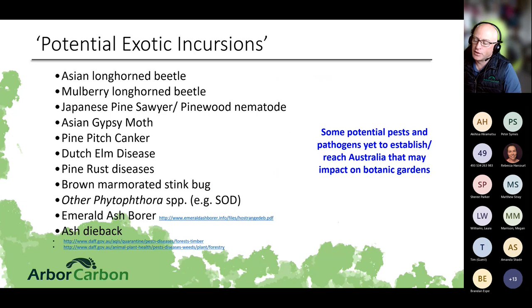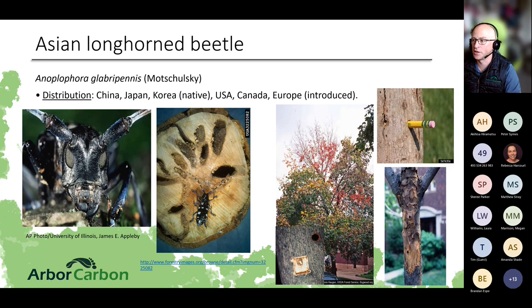Moving to potential future threats: Asian longhorn beetle is a very large beetle, growing up to five centimeters in length, distributed through China, Japan, Korea, the US, Canada, and Europe. In the US, significant money and effort has gone into attempting eradication because it is highly polyphagous across many hardwood species and has caused substantial decline of urban landscape trees. Exit holes are large enough to fit a whole pencil inside.